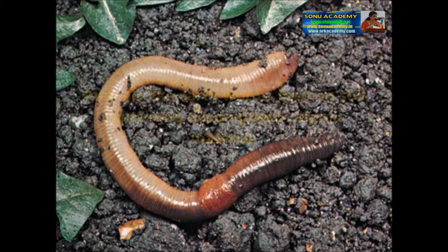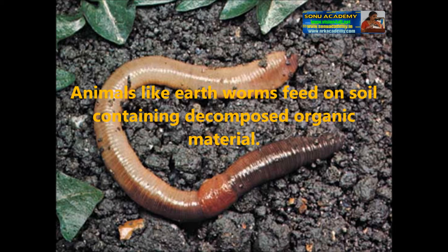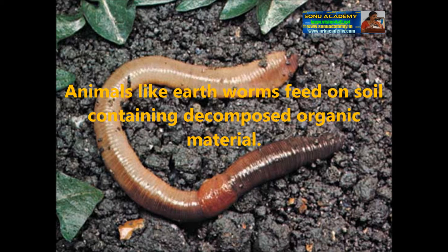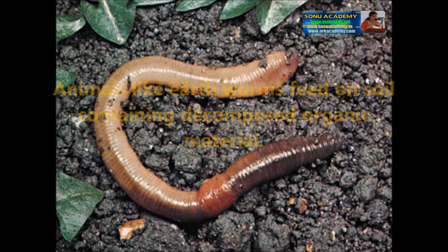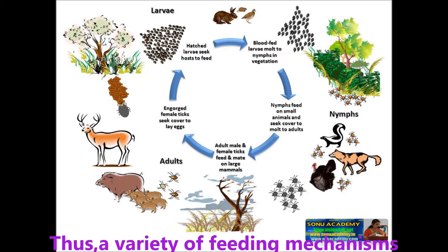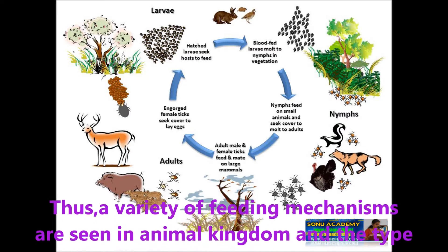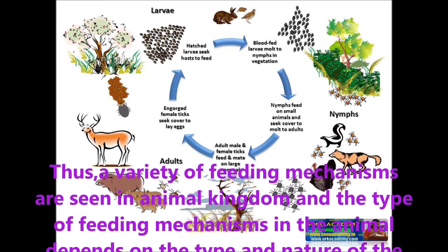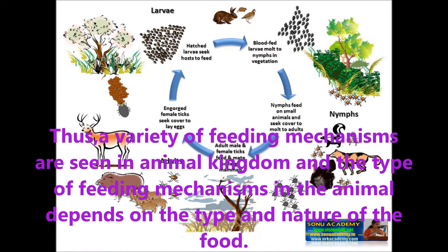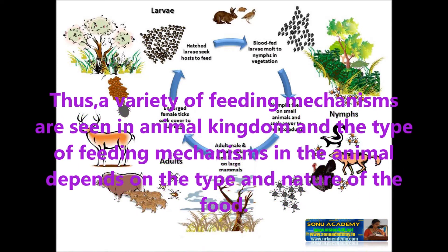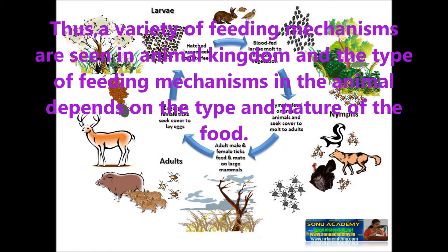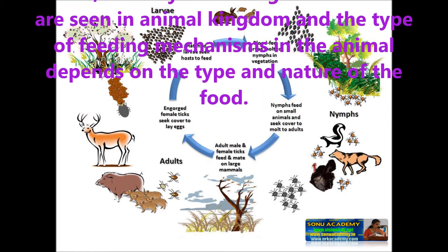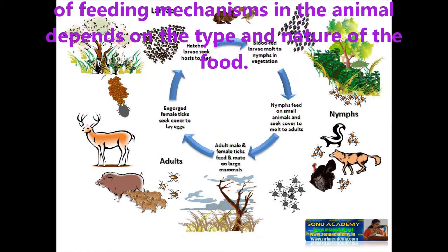Animals like earthworms feed on soil containing decomposed organic matter. Thus, a variety of feeding mechanisms are seen in the animal kingdom, and the type of feeding mechanism depends on the nature of the food.